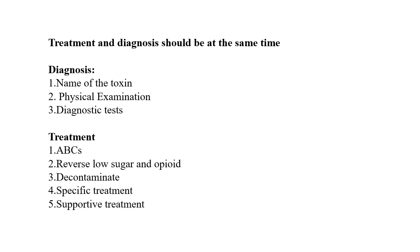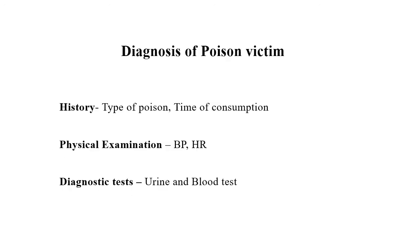For treating a poisoned person, we have very little time for diagnosis and treatment, so both must be done simultaneously to save the patient's life. Diagnosis involves the history, type of poison, and time of consumption; physical examination such as blood pressure, heart rate, and temperature; and diagnostics using urine or blood samples.